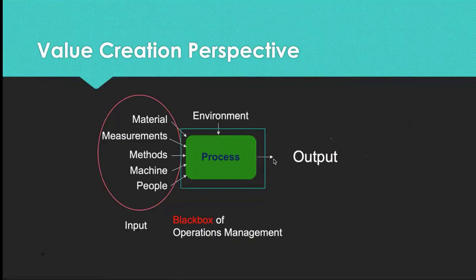It's called a black box because although we know materials and methods go in, each company, each person, each organization has a different operations management system — and that is like a black box; we don't know exactly what's going on inside. However, depending on this black box, the quality of outputs is quite different. Toyota, BMW, Benz, and Ford have very similar operational inputs, but very different quality — because they have different operations management.